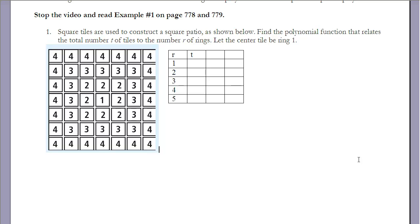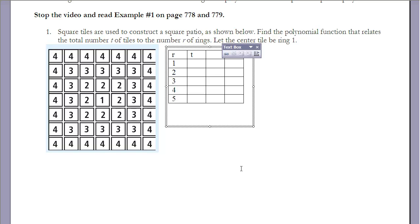You may want to read Example 1 on pages 778–779 before continuing. It says: square tiles are used to construct a square patio — find the polynomial function that relates the total number of tiles to the number of rings, letting the center tile be ring number one. For each ring we want to find the total number of tiles. Sometimes data is given; here we have to generate it.